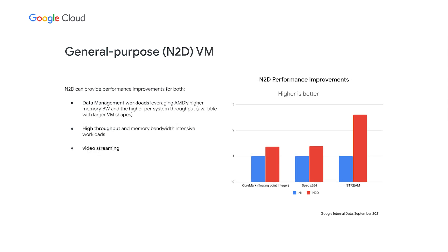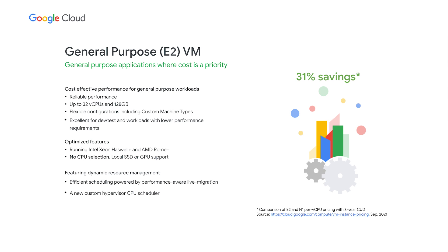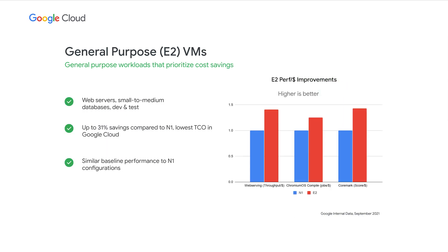N2D machines are ideal for high-throughput workloads that can benefit from having a large number of threads, and also for workloads that may benefit from confidential computing features. Switching gears, our E2 VM family is ideal for applications where cost is a priority. E2 VMs offer machine types up to 32 vCPUs and 128 gigabytes of memory, with flexible custom machine types. E2 runs on Intel Haswell through Cascade Lake and AMD Rome processors, and is ideal for dev and test or batch processing workloads, providing up to 31% cost savings compared to our N1 family per VM.